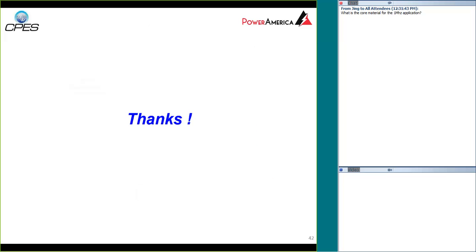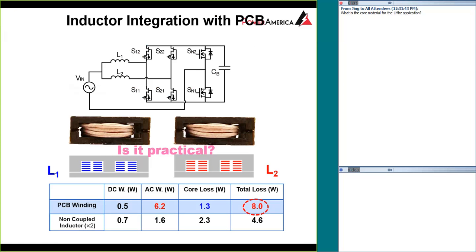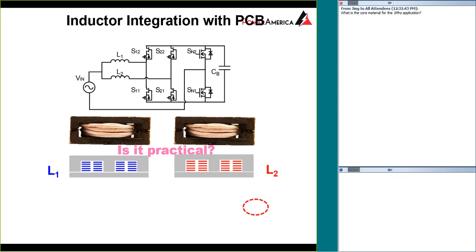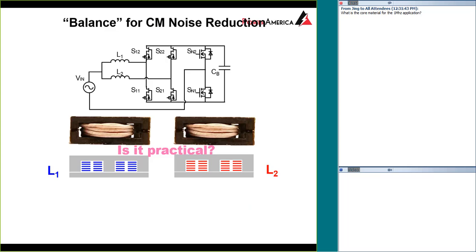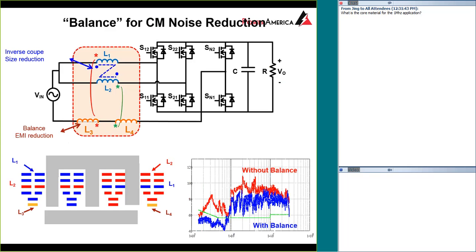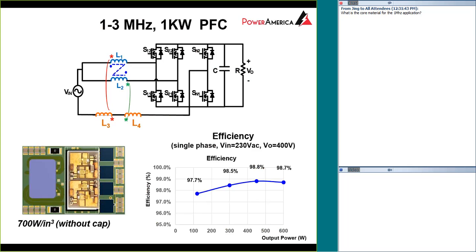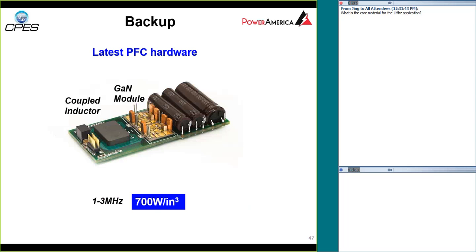I think I'm done with my presentation. I only left seven minutes for Q&A. The only thing that cannot be automated is the bulky capacitor. Capacitor size can be reduced using the third-order harmonic injection.